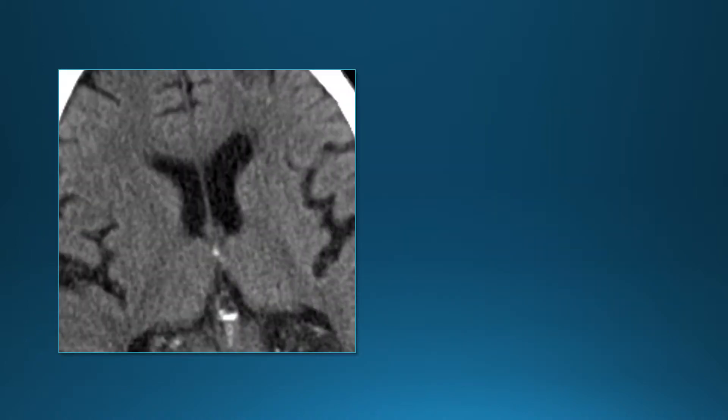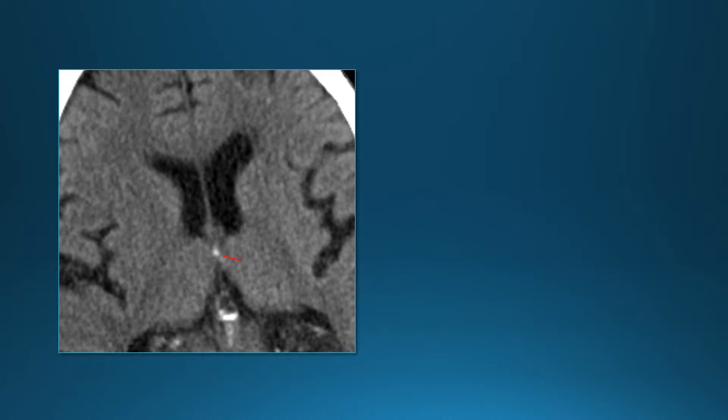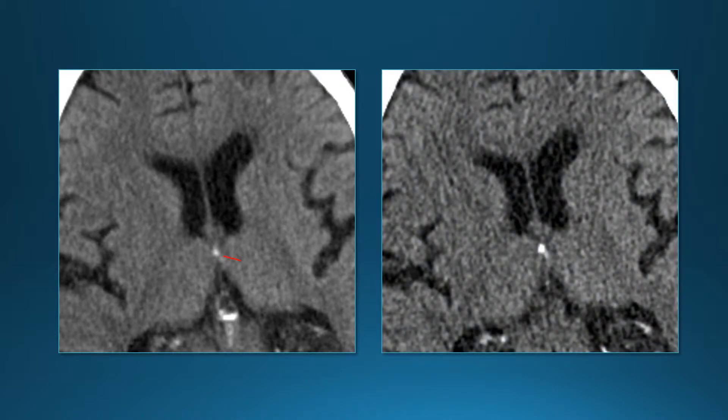Sometimes you can get confused — a high-density lesion in the anterior third ventricle near the foramen of Monro raises the question of colloid cyst, but you can also have calcified choroid plexus in this location. Thin sections make it easier to tell this is focal calcification in the choroid plexus in the roof of the third ventricle, and it can sometimes simulate a small colloid cyst.